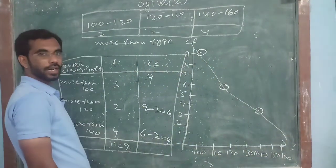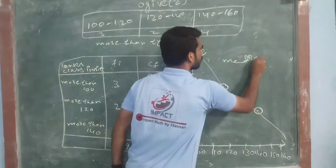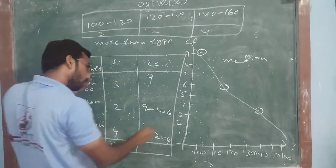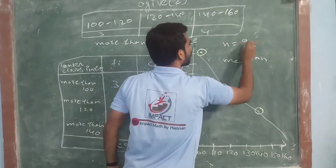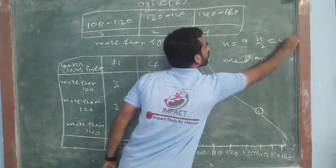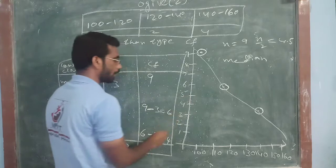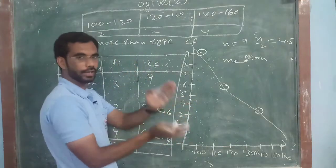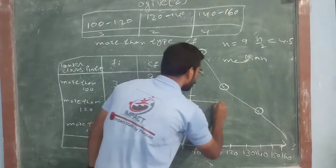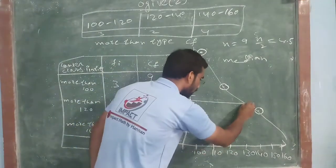Now, how to make the median in this one? N is equals to 9. So, N by 2 is equals to 4.5. Where is 4.5? It will be approximately here in between 4 and 5. Make the mark. Where these two are touching, intersecting, join it.